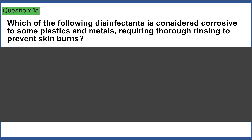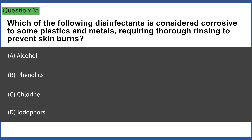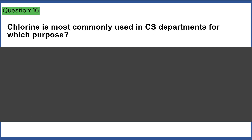Which of the following disinfectants is considered corrosive to some plastics and metals, requiring thorough rinsing to prevent skin burns? a) alcohol, b) phenolics, c) chlorine, d) iodophors. Answer: B, phenolics.